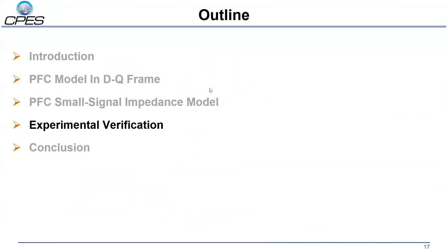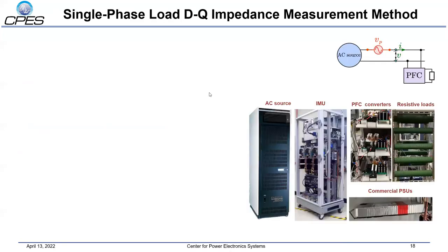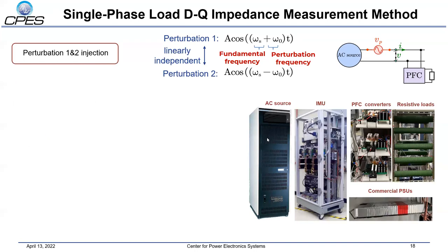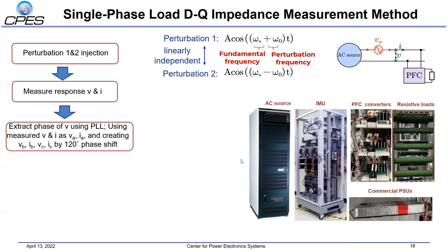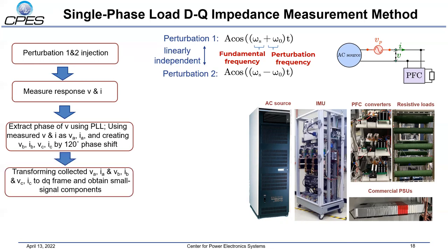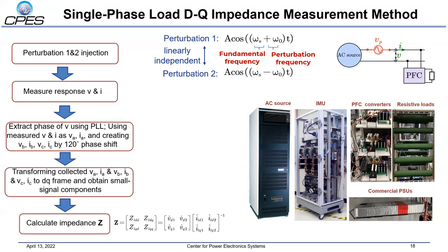With the PFC DQ impedance analytical model, experimental measurements are also used to verify the accuracy of the derived model. This figure shows the single-phase impedance measurement unit (IMU), connected in series between the device under test and the single-phase AC source. For each frequency point, two linearly independent perturbations are injected. The voltage and current response at the PFC side are measured. The phase of the voltage V is tracked using a PLL, and with this angle, the voltage and current at virtual frame B and frame C are created with 120-degree phase shifts. The three sets of signals are then transformed to the DQ frame, the small-signal components are obtained, and the small-signal impedance is calculated.